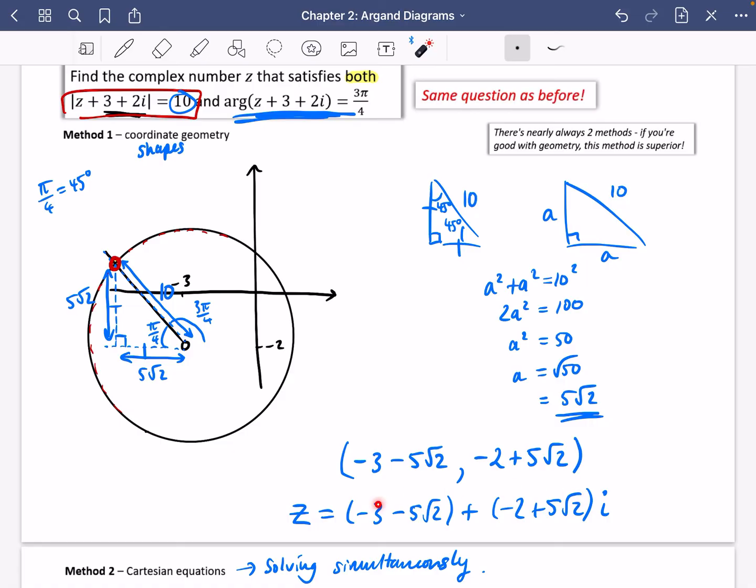So that complex number satisfies both of these things that we've got here. And I guarantee if you took this complex number, you added 3 and 2i to it and you found its modulus, you would get 10. And also, if you took this complex number, you added 3 and 2i to it and you found its argument, I guarantee that you would get 3π over 4.